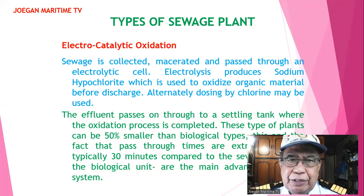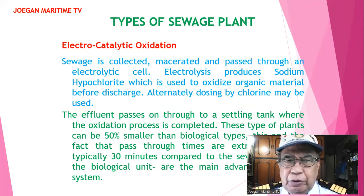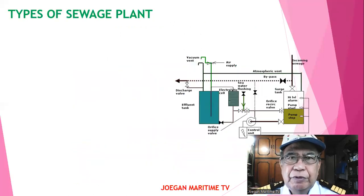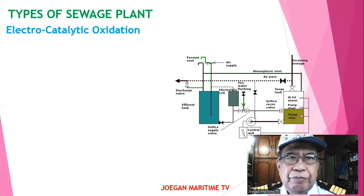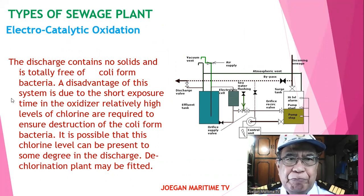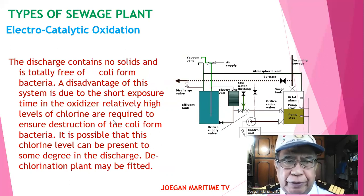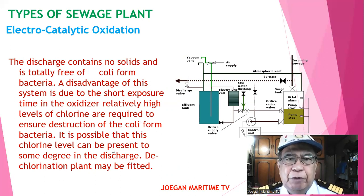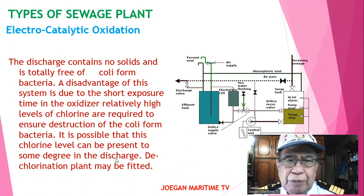This type of plant can be 50% smaller than the biological type, typically taking 30 minutes compared to the other, which is its main disadvantage. The discharge contains no solids and is totally free of coliform bacteria. However, due to the short exposure time in the oxidizer, relatively high levels of chlorine are required to ensure destruction of coliform bacteria, and it is possible that this chlorine level can be present to some degree in the discharge.